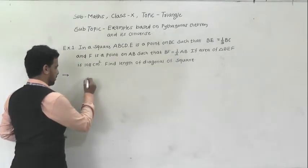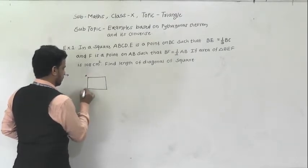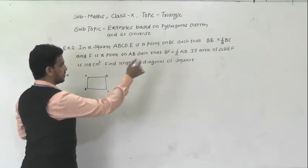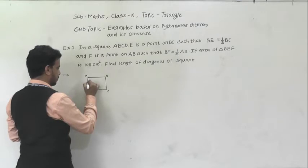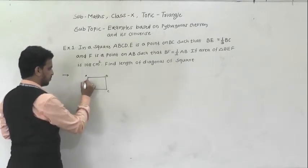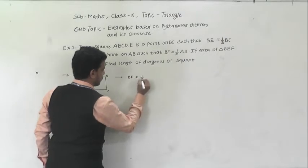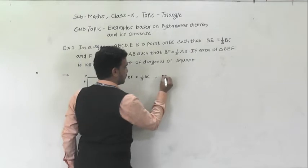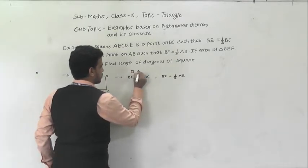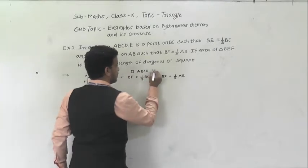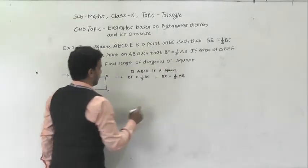First we draw the diagram. ABCD is a square. E is a point such that BE is equal to one third of BC, and F is a point on AB such that BF is equal to half AB. So the given quantities are: BE is equal to one third of BC, BF is equal to half AB, and ABCD is a square.